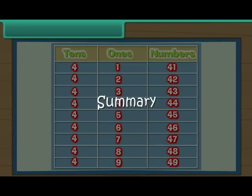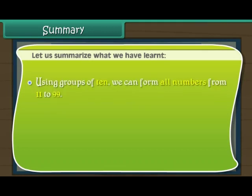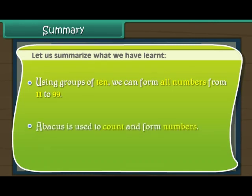Summary. Let us summarise what we have learnt. Using groups of ten, we can form all numbers from 11 to 99. An abacus is used to count and form numbers.